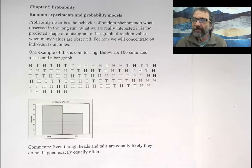Probability describes the behavior of random phenomenon when observed in the long run. What that means is you have to repeat the random experiment over and over again. What we are really interested in is the predicted shape of a histogram or bar graph of random values when many values are observed. For now, we'll just concentrate on a single type of outcome rather than all the outcomes at once.